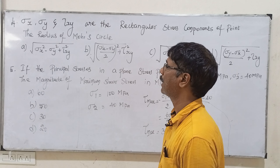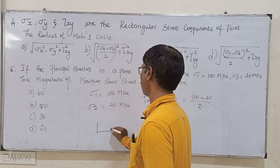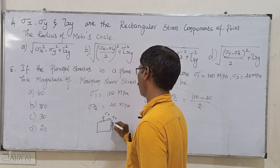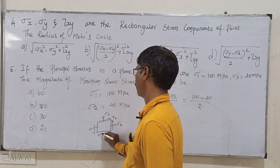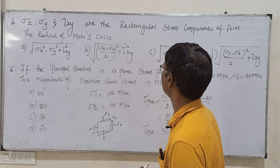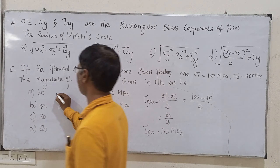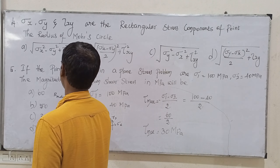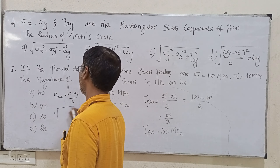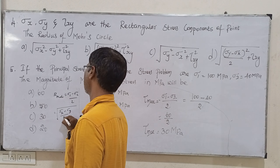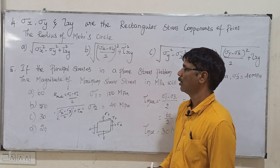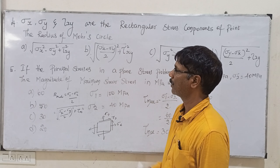If we are given sigma x, sigma y, and tau xy, the radius of the Mohr's circle formula is: radius equals the square root of (sigma x minus sigma y) divided by 2, whole square, plus tau xy squared. This is the correct formula and the right option.